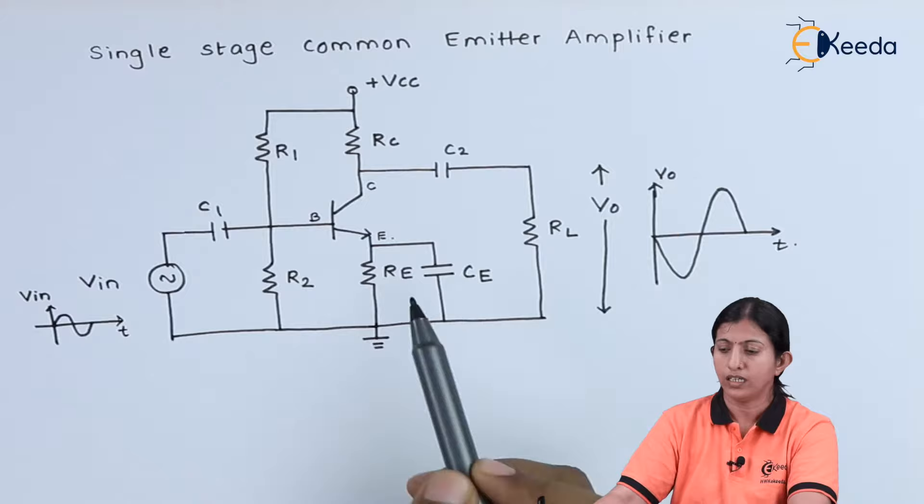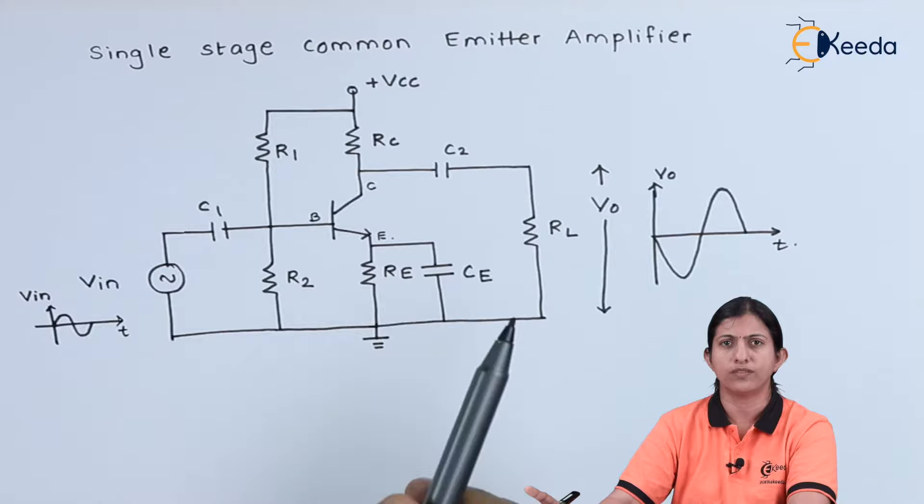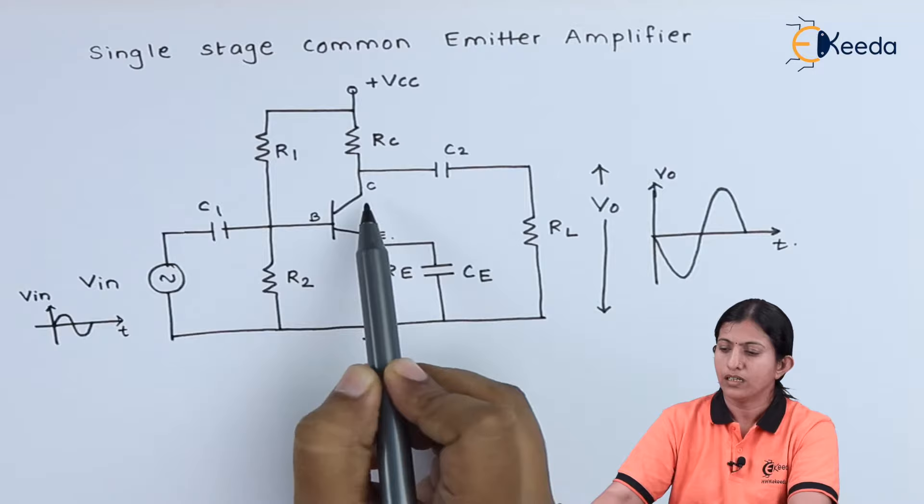This is the diagram of single stage common emitter amplifier. Here, we are using an NPN transistor and we are using single stage of amplification. That is, we are using only one transistor.